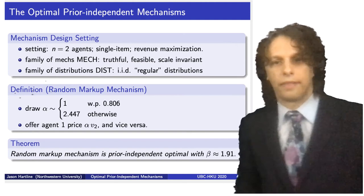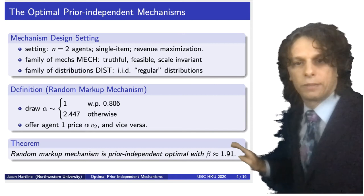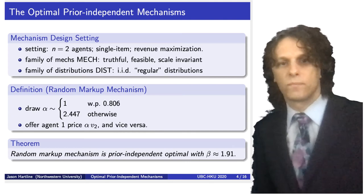The theorem states that the random markup mechanism is the prior independent optimal mechanism in this two-agent revenue maximization setting, and its approximation factor is 1.91.